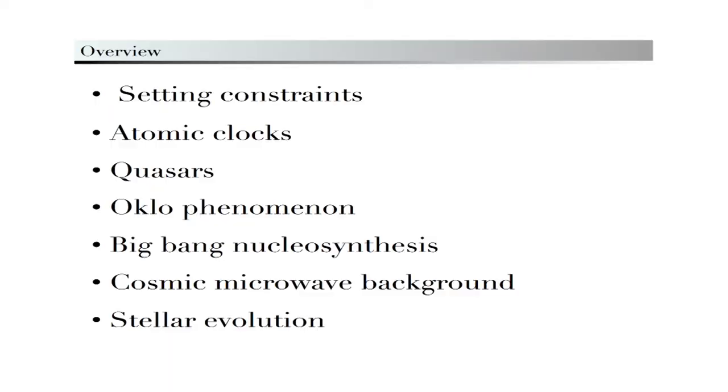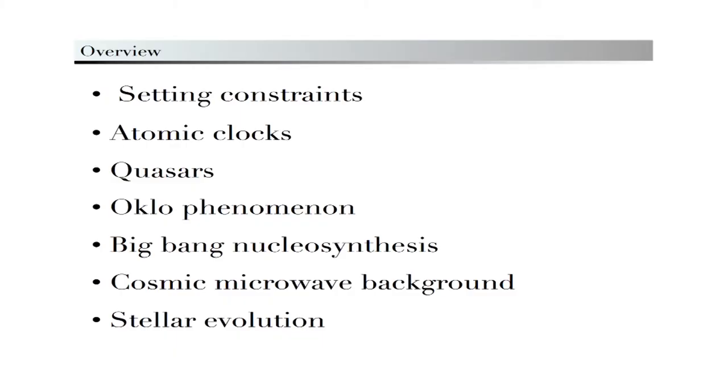What I will do is first tell you what we are doing when we want to set constraints — the way we proceed — and then I will take a series of examples. I don't want to go into all the technical details because each of these is very technical, but I will try to show you what you have to know, what you have to observe, the kind of approximations you have to make, and also give you a picture of what we know about fundamental constants in our observable universe. This will go from Big Bang nucleosynthesis — basically one second after the Big Bang — to today in the laboratory with atomic clocks, spanning almost 14 billion years of history.